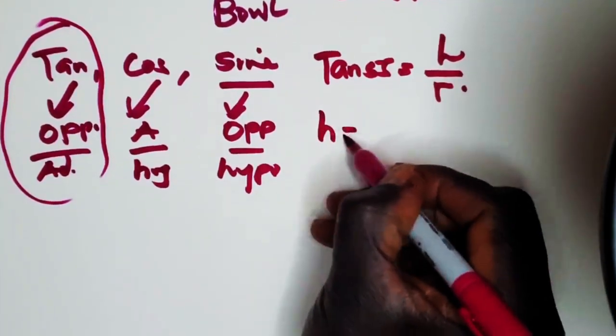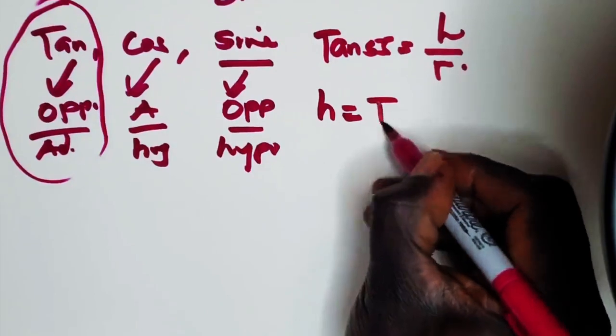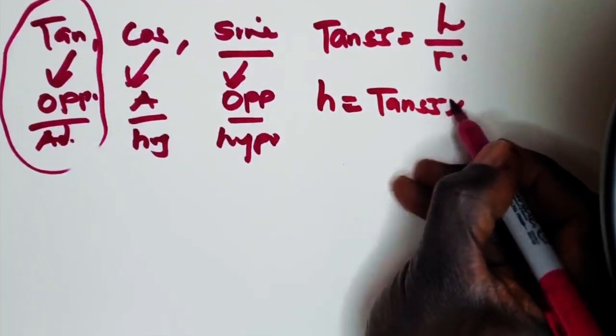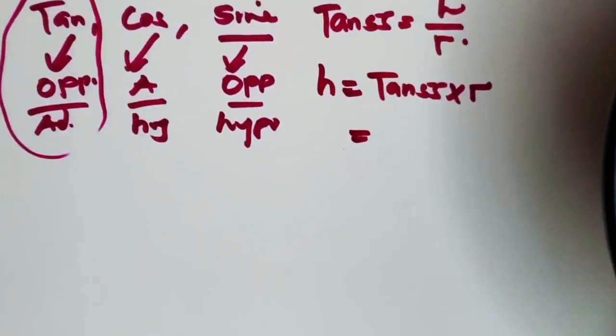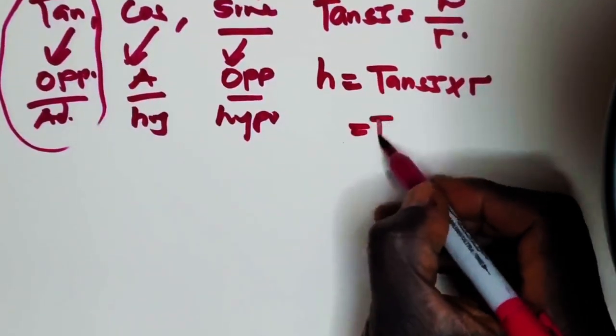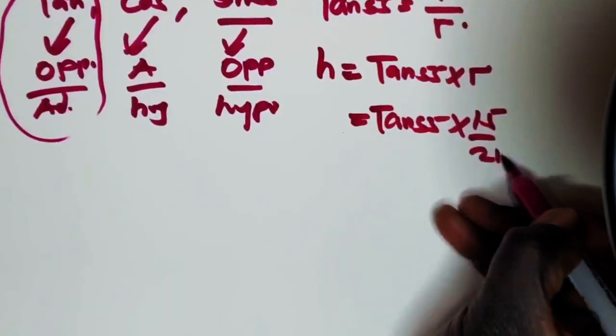Now we need H. Put the rest on your right side. That is tan 55 times R, which is 15 over 2 pi.